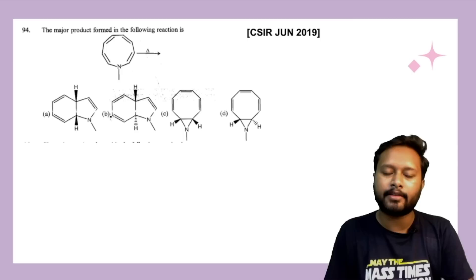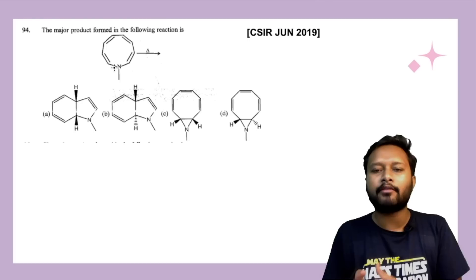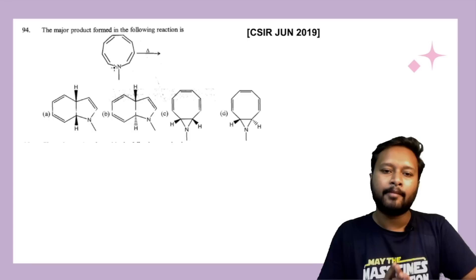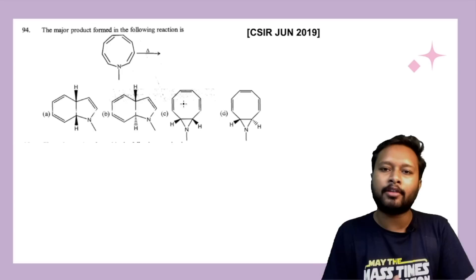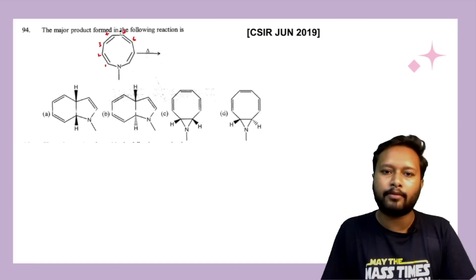For the 4Nπ system, you would get a bicyclic ring — an eight-membered ring and a three-membered ring. Obviously, an eight-membered ring and a three-membered heterocyclic ring are less stable compared to the five- and six-membered rings from options A and B. So rather than undergoing 4Nπ addition, the preferred addition is on the 6Nπ system — considering carbons 1 through 6. Under thermal condition this is a 4N+2π system.